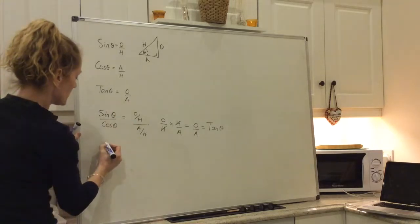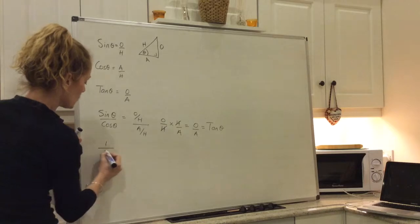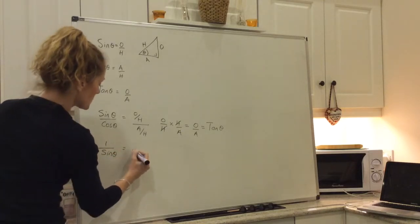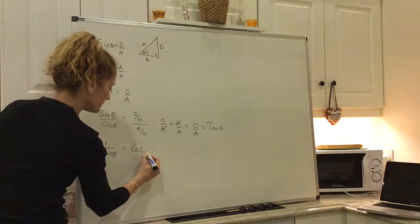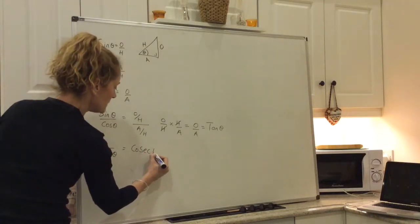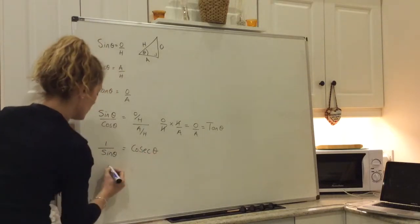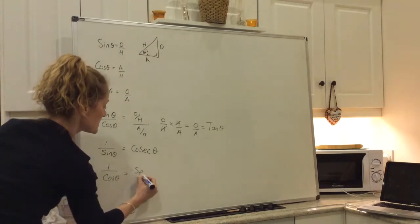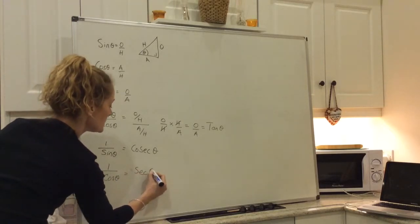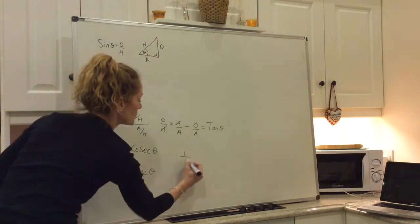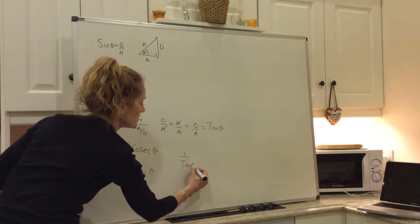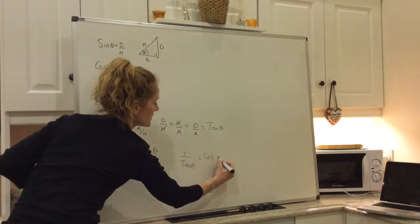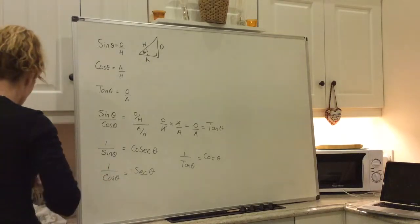Also, just on a naming front, we also have names for 1 over sine theta, which is equal to cosecant theta. And 1 over cosine theta, which is equal to secant theta. And 1 over tan theta, which is called cotan theta. Just on a naming front.